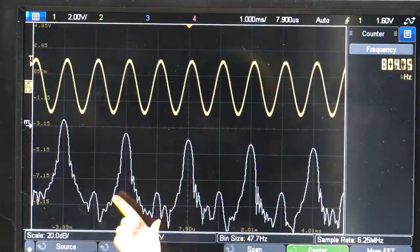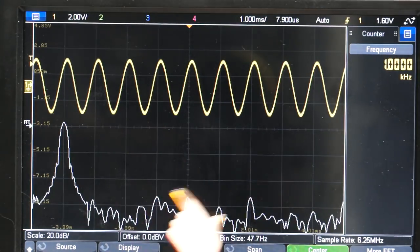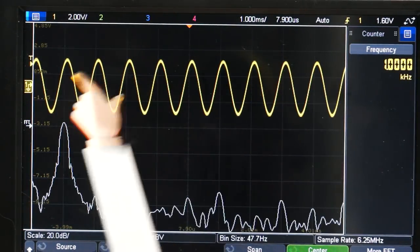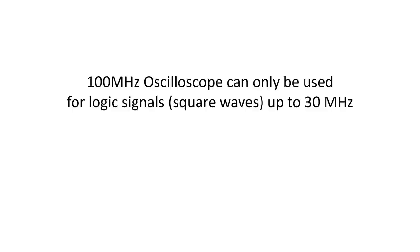Otherwise, it will be displayed as a sine wave, even if it is a logical signal. So a 100 MHz oscilloscope is good for logic signals up to 30 MHz maximum, usually even less.